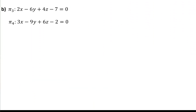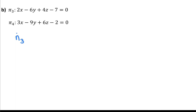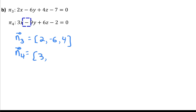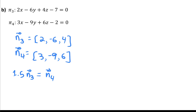Let's move on to part B. I have the scalar equations of two planes. Looking at the normal vectors: normal vector of plane three is (2, -6, 4), and normal vector of plane four is (3, -9, 6). If we multiply normal vector three by 1.5, it equals normal vector four exactly. So those normal vectors are scalar multiples of each other, meaning the normals are parallel, which means the planes are parallel to each other.